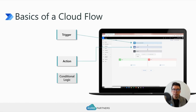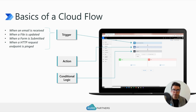Talking about a flow at a high level: at its core, there are really three domains of things in a flow. The first is a trigger. Every flow needs some type of trigger to run. For automated flows, think of when an email is received, when a file is updated, or when a form is submitted — these event-based ideas cause a flow to run. Scheduled triggers and button presses are also examples of events triggering a flow.